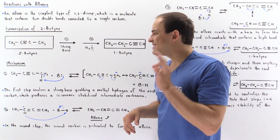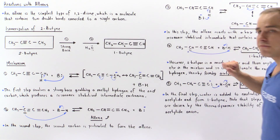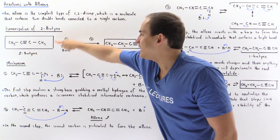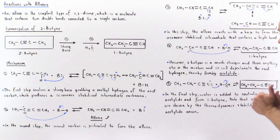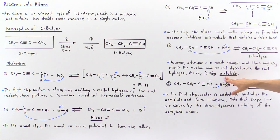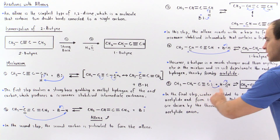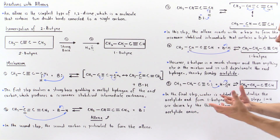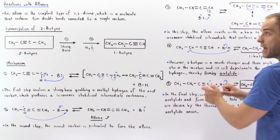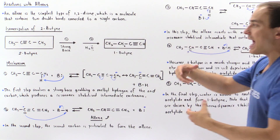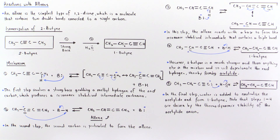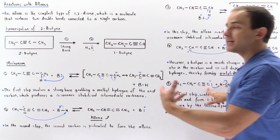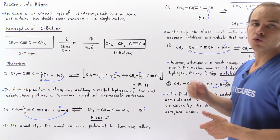The question is: what exactly drives steps one through four — the formation of the acetylide from 2-butyne in the presence of strong base? The answer lies in the thermodynamic stability of the acetylide molecule. Because this acetylide carbanion is thermodynamically very stable, that stability drives the formation of the acetylide from 2-butyne. We then add water to form 1-butyne. The reaction takes place in the first place because the acetylide is thermodynamically more stable than any other intermediate in the reaction.